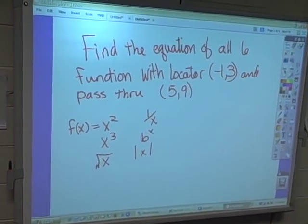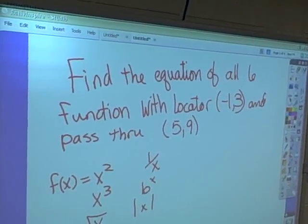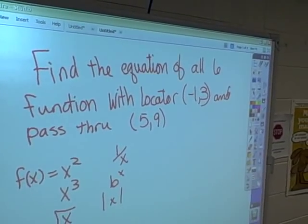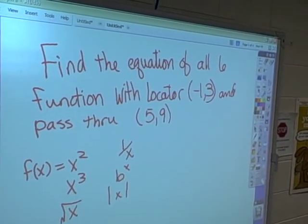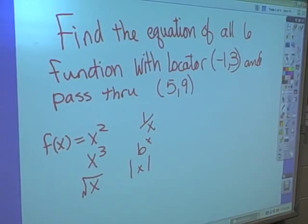Good afternoon, Algebra 2 students. You can see that I've got the problem up on the board here. Find the equation of all six functions with a locator point of negative one, three, and passes through the point five, nine.